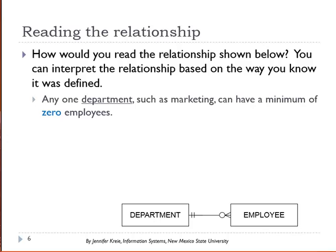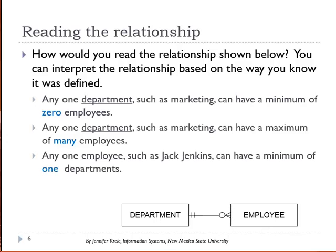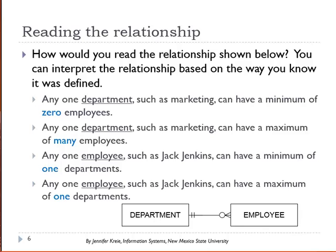Any one department, such as marketing, can have a minimum of zero employees — so we're defining from department to employee. Any one department can have a maximum of many employees, and that's where we see the crow's foot. Any one employee, such as Jack Jenkins, can have a minimum of one department, and a maximum of one department.